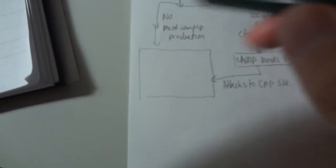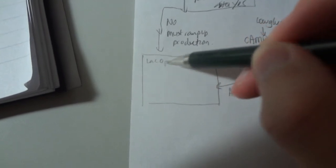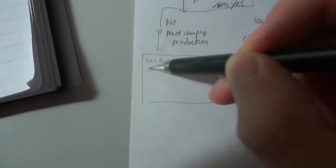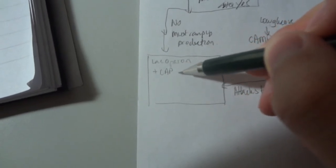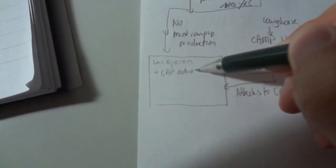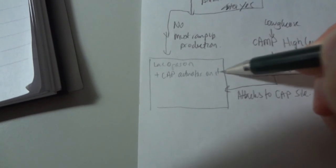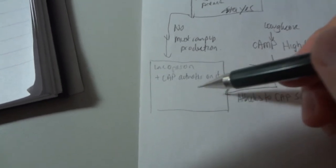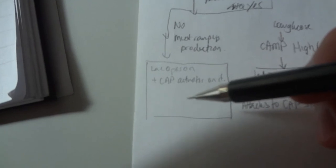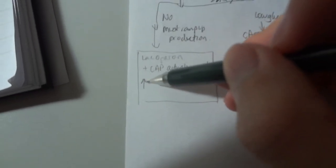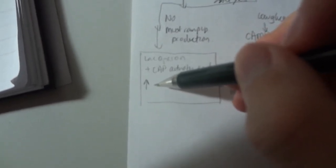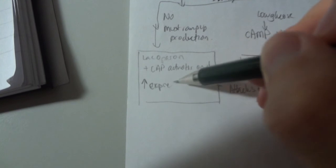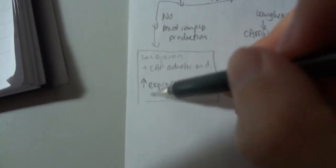So it attaches to the CAP site. So the lac operon now has a CAP activator on it. And this encourages RNA polymerase to stick onto the thing. So the expression of this gene significantly goes up.